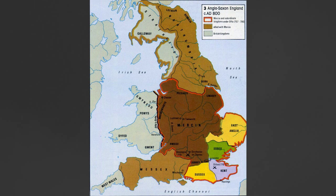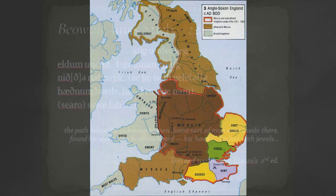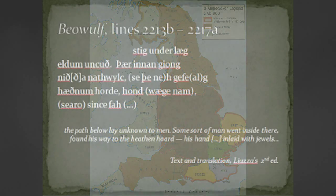By the mid-8th century, you have the establishment of what we call the Anglo-Saxon Heptarchy — from the Greek, meaning the rulership of seven, from heptas, seven. Seven kingdoms, essentially, each with its own region — four main kingdoms and three minor ones. This will change eventually when the Vikings invade, but that's the subject of another video. You have a more or less peaceable relationship between this Anglo-Saxon Heptarchy, and that's kind of the state of affairs we have historically speaking.